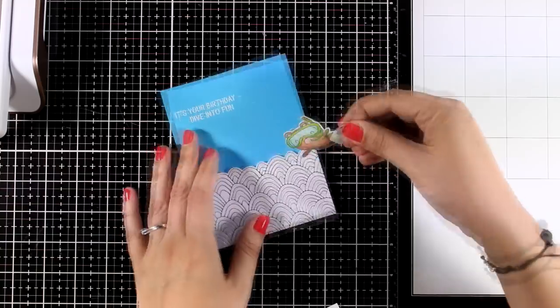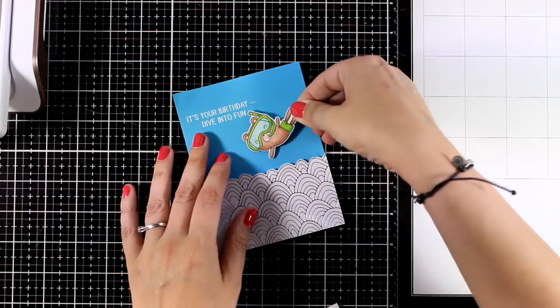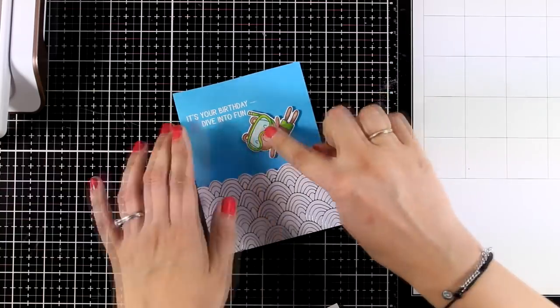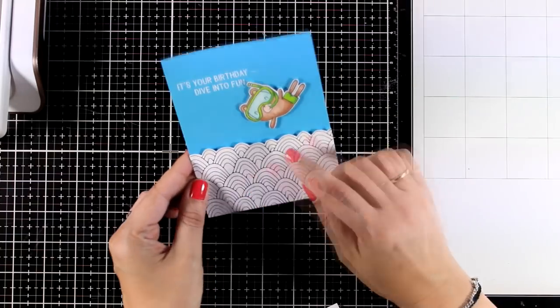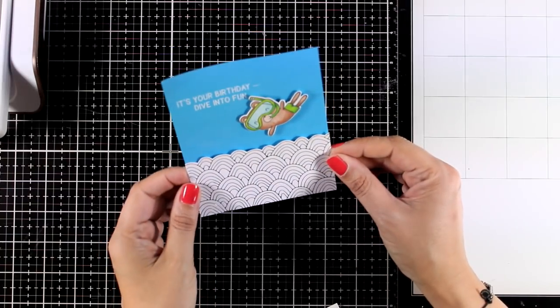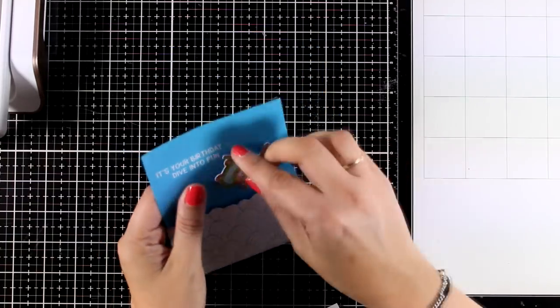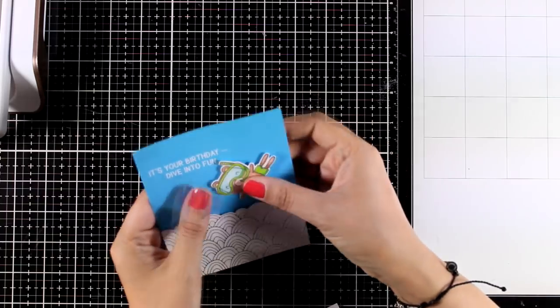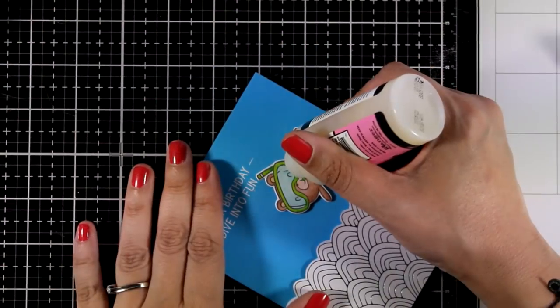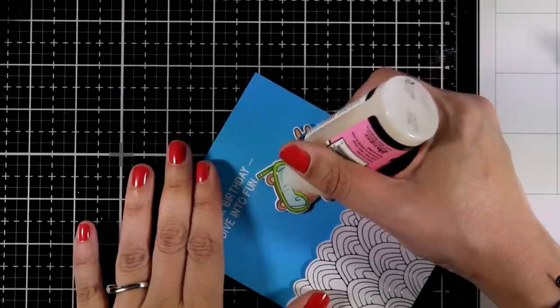He is a little guy that dives in the ocean. I stamped and colored it with my alcohol markers and this also comes from the same stamp set as the fish that I used in the previous card. And you can see that this is a very simple card. The foiling on the waves really makes it special.